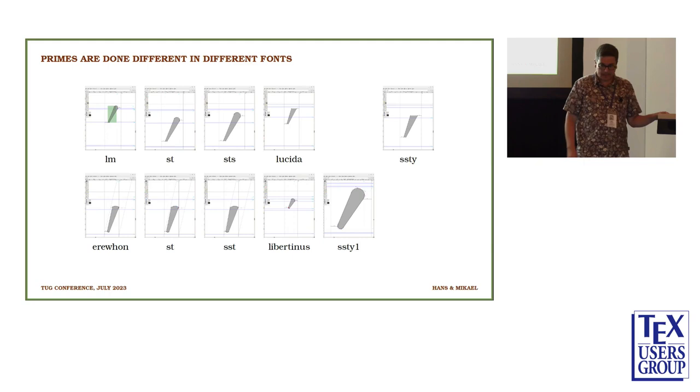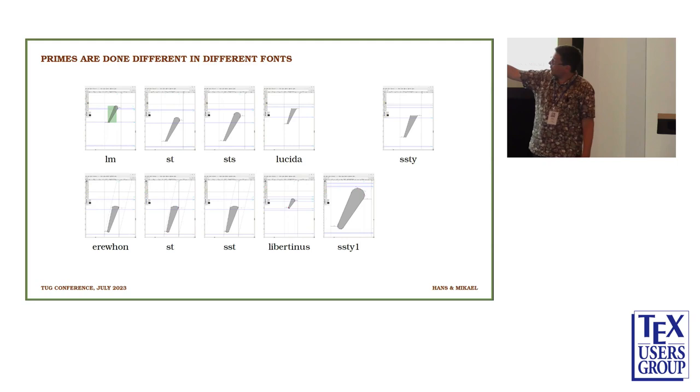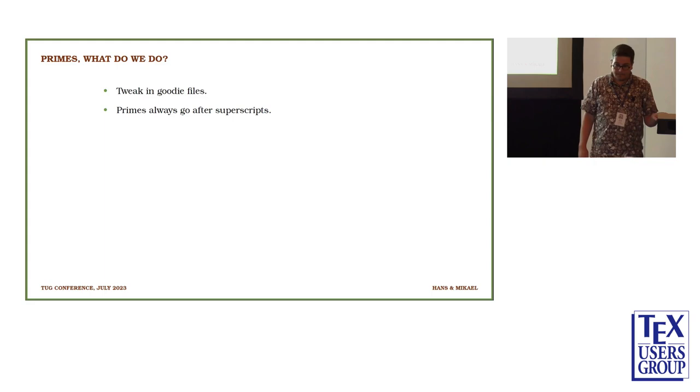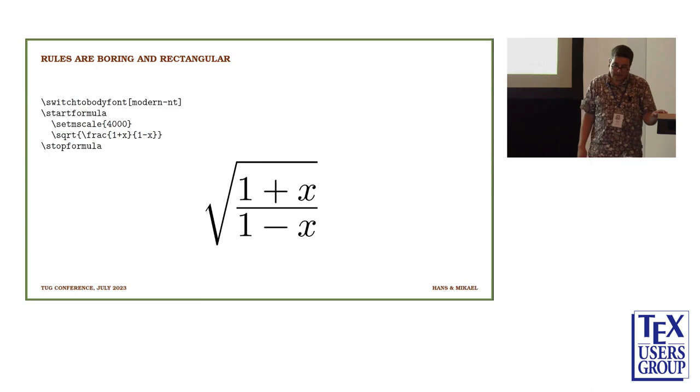Primes, short thing. They look very different in different fonts. Some of them have a base character sitting high, and then they have some alternatives for superscripts. And they can be differently big. You see this one from Libertinus, it's extremely big. Erewhon has three ones sitting on the baseline instead. They sit in different places. So there is a mechanism, a tweak for that. We tweak it in the Goody files font by font. That tweak will stay. We don't know how to handle it otherwise. They always go after superscript.